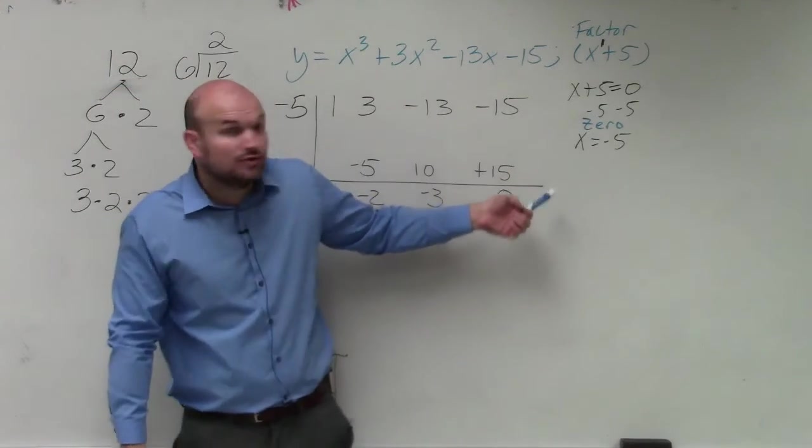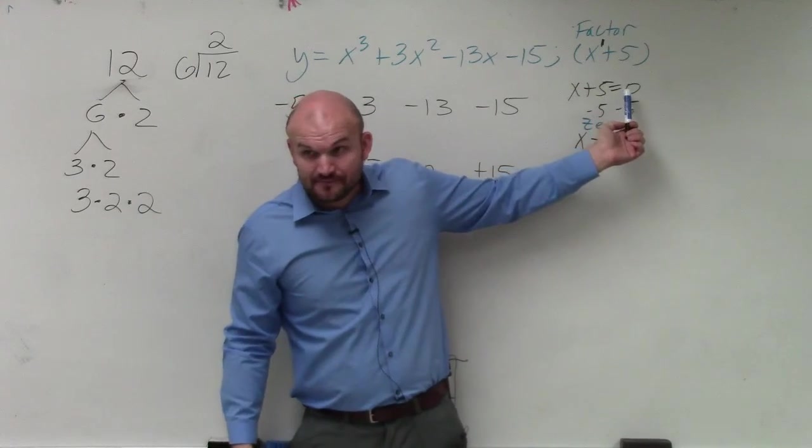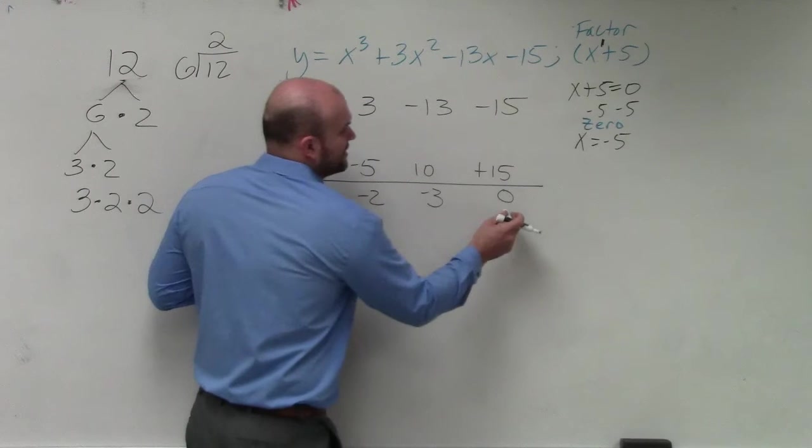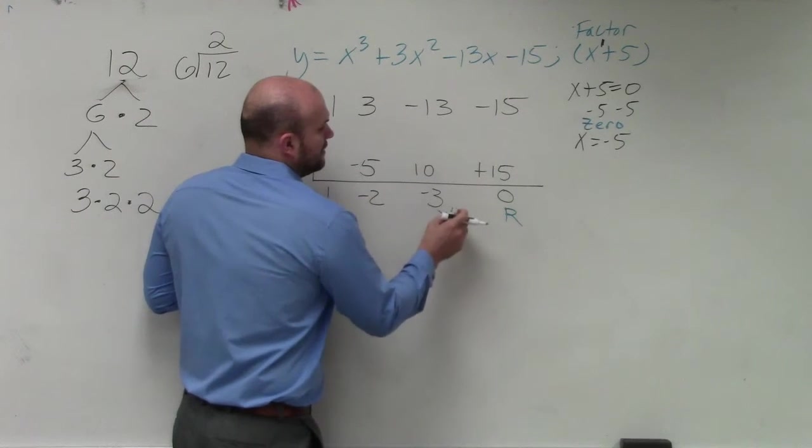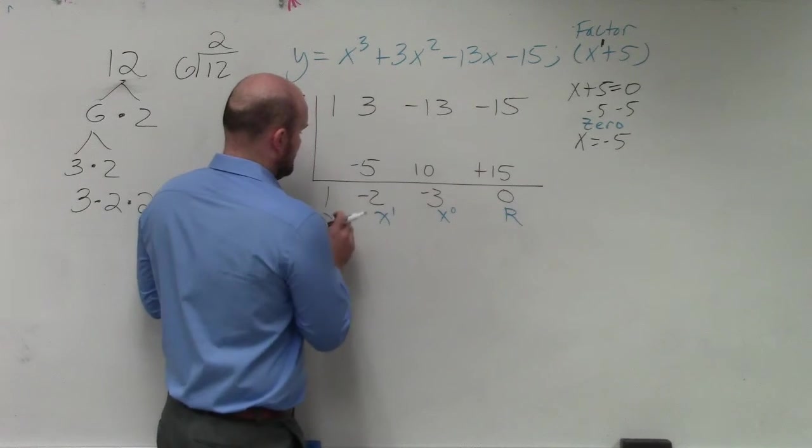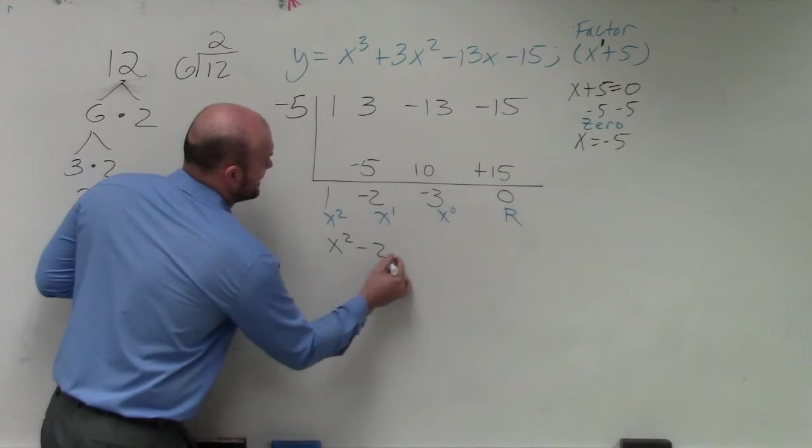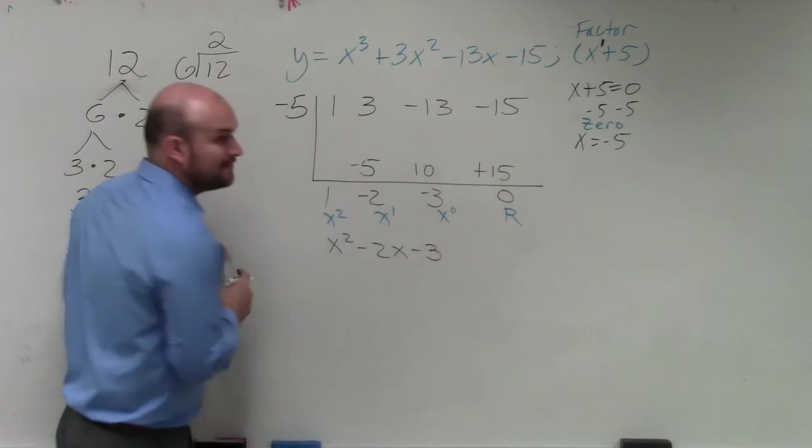So does that prove that x plus 5 is a factor? Yes, because it evenly divides into it. But what is the quotient? What is the answer? That's your remainder, constant, linear, quadratic. So the answer is x squared minus 2x minus 3. Correct?